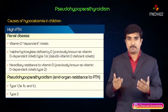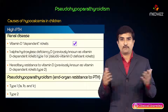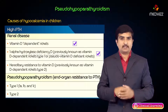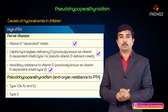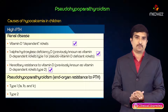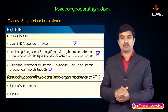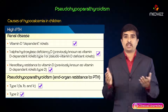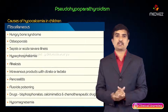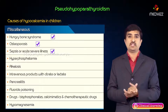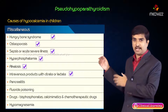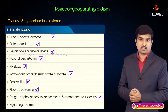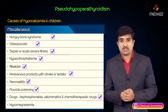Renal disease can also cause hyperparathyroidism, including vitamin D-dependent rickets due to 1-alpha hydroxylase deficiency (previously vitamin D-dependent rickets type 1 or pseudo-vitamin D-deficient rickets) and hereditary resistance to vitamin D (previously vitamin D-dependent rickets type 2). Pseudo-hypoparathyroidism with its subtypes (type 1a, 1b, 1c, and type 2) is also a cause. Miscellaneous causes of hypocalcemia include hungry bone syndrome, osteoporosis, sepsis, hyperphosphatemia, alkalosis, IV products with citrate or lactate, pancreatitis, fluoride poisoning, bisphosphonates, calcimimetics, and certain chemotherapeutic agents.